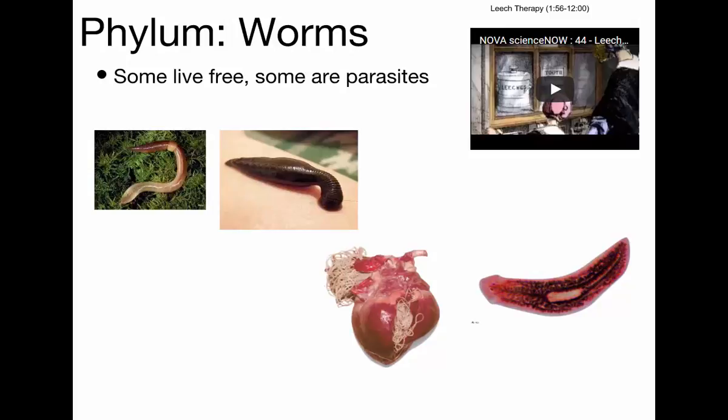If a dog gets infected with heartworm, the worm makes its way into the circulatory system and eventually into the heart, where it grows and reproduces until it becomes so large it clogs up the heart and the dog dies. Those monthly tablets prevent that heartworm infection. My dog one time had a tiny little white thing about the size of a grain of rice in her waste that was moving — turned out to be a worm. We brought a sample to the vet and they gave her medicine that killed it.